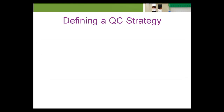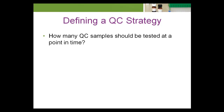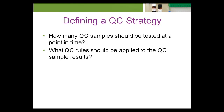Thus, there are three questions that must be answered to define a QC strategy in the modern laboratory. Number one, how many QC samples should be tested at a point in time? Number two, what QC rules should be applied to the QC sample results? Number three, when should QC testing occur?